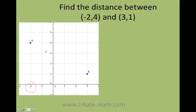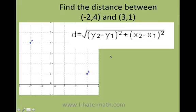You need to go ahead and follow a formula. The formula goes: distance is equal to the square root of (y2 minus y1) squared plus (x2 minus x1) squared. Let's do it — it is very easy to do.